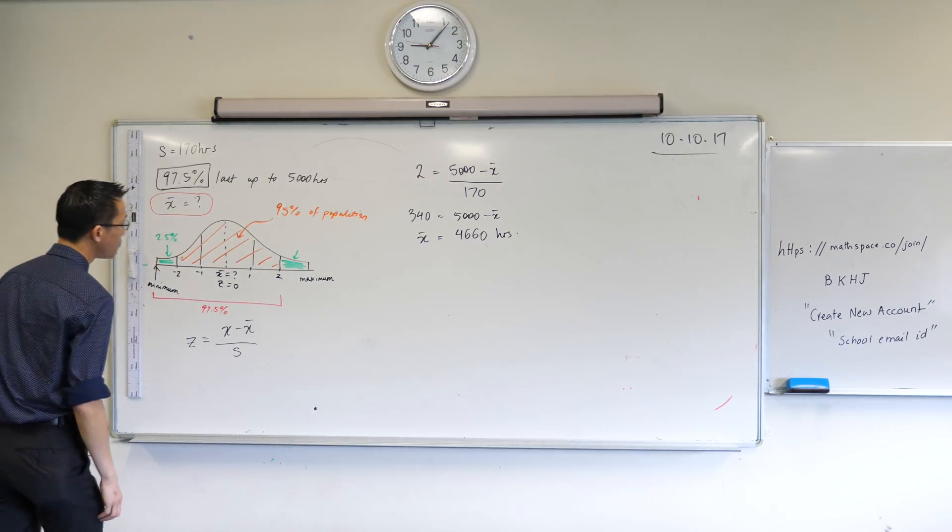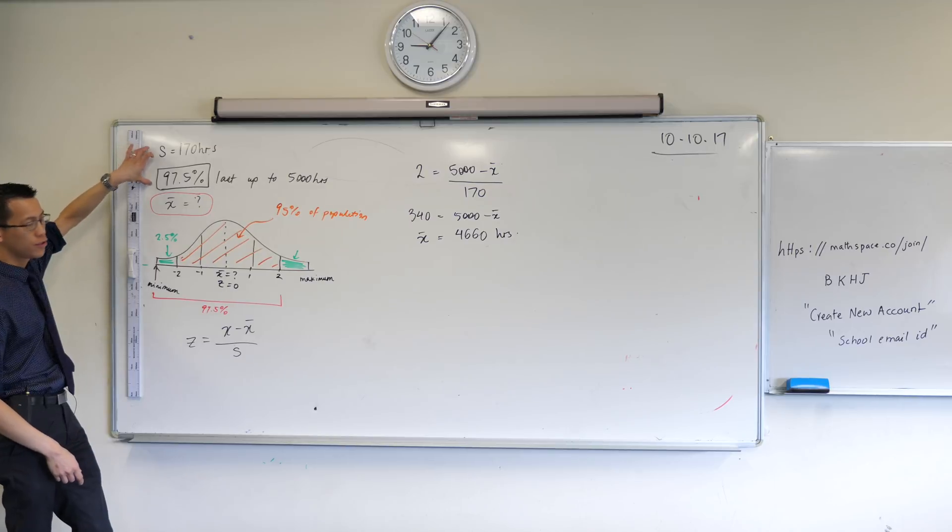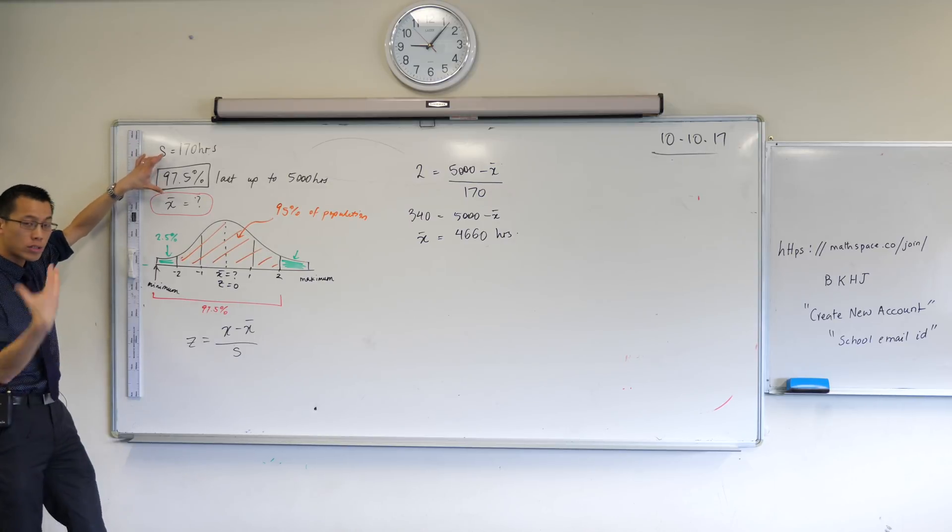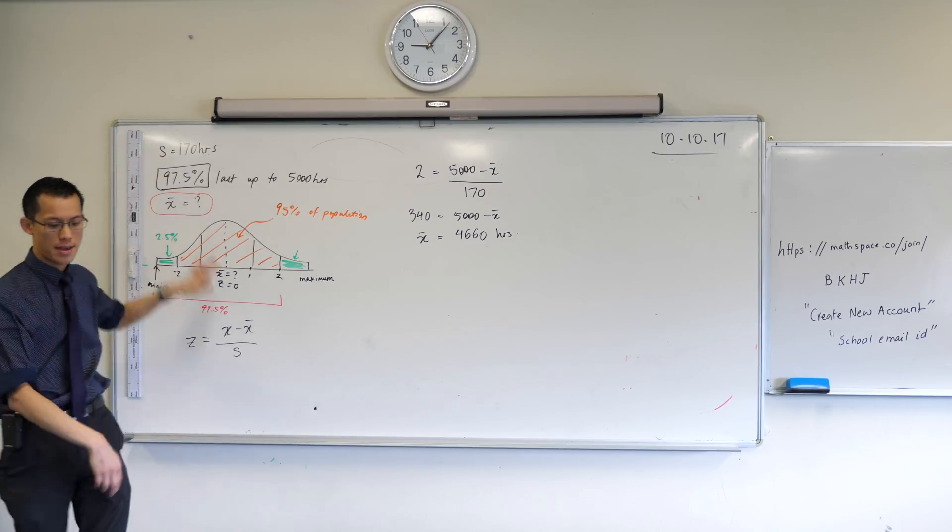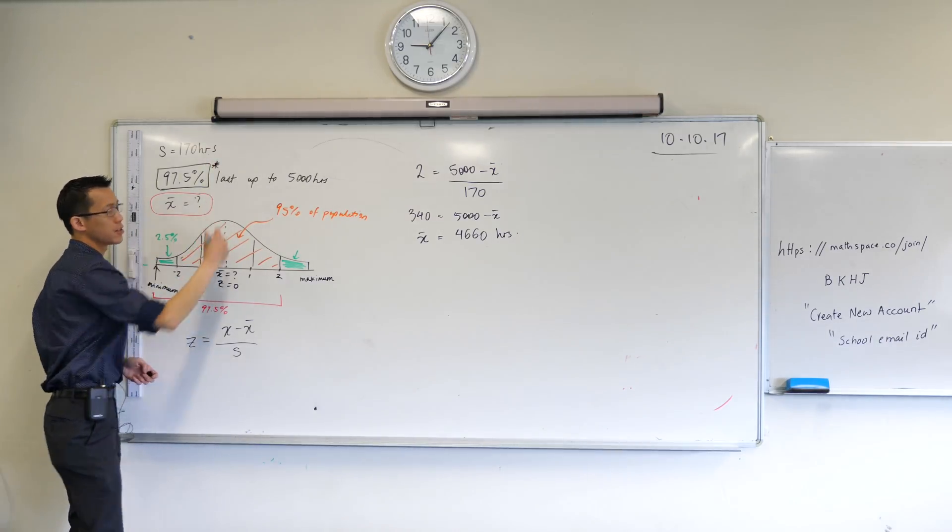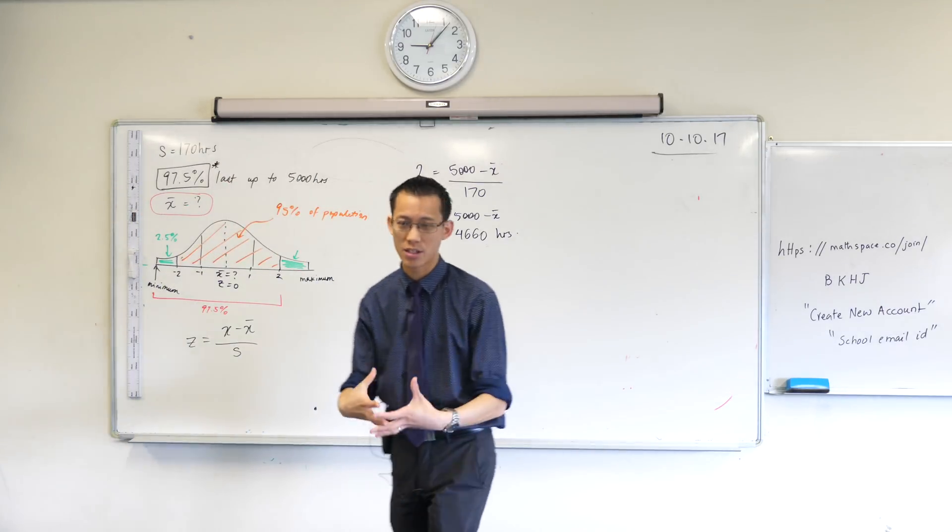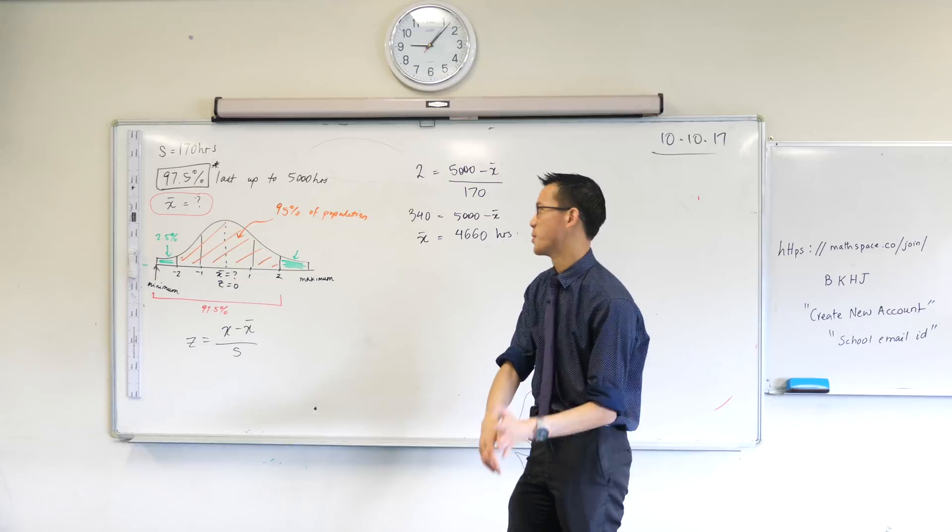So just to review, how did I go through this question? I knew that I had to use all of this information here, but how was I going to use it? The big clue for me in terms of what started me off was this percentage. That instantly told me I'm going to have to do something with z-scores, even though the question never says z-score.